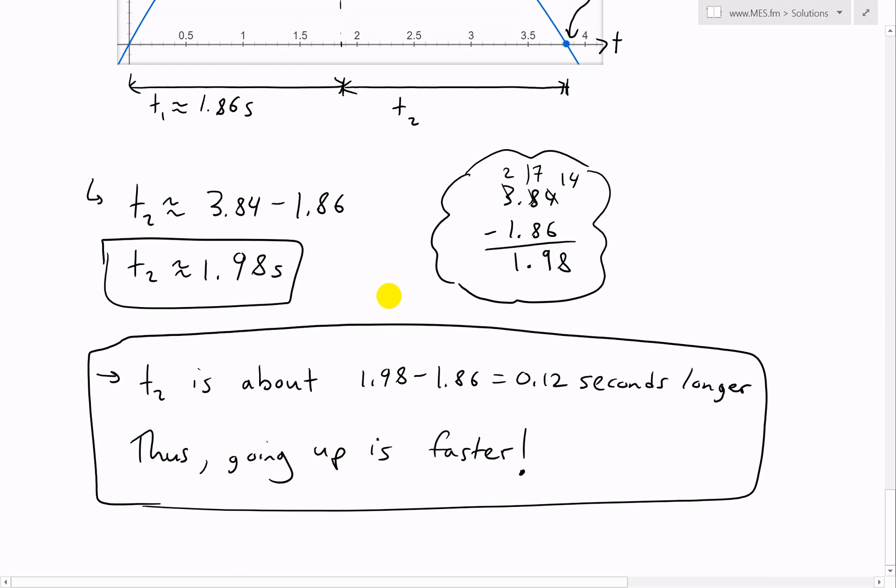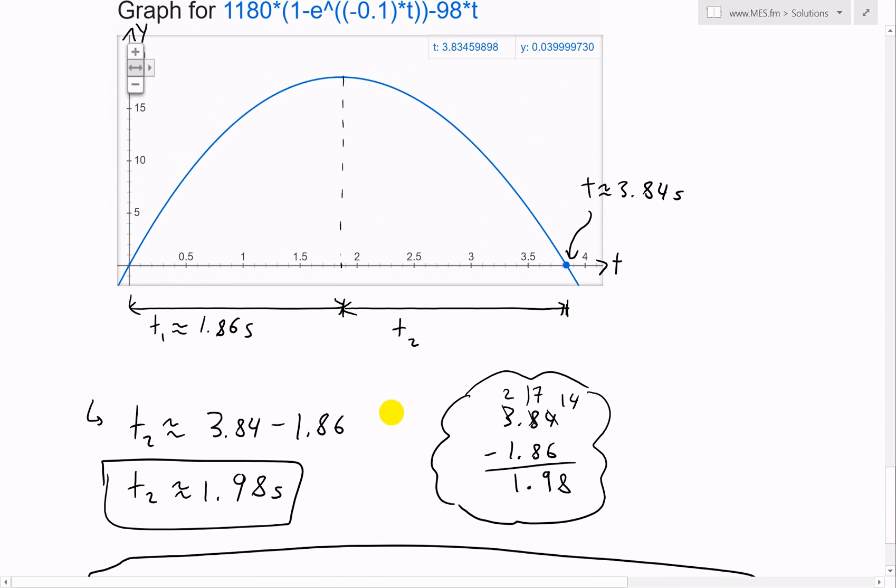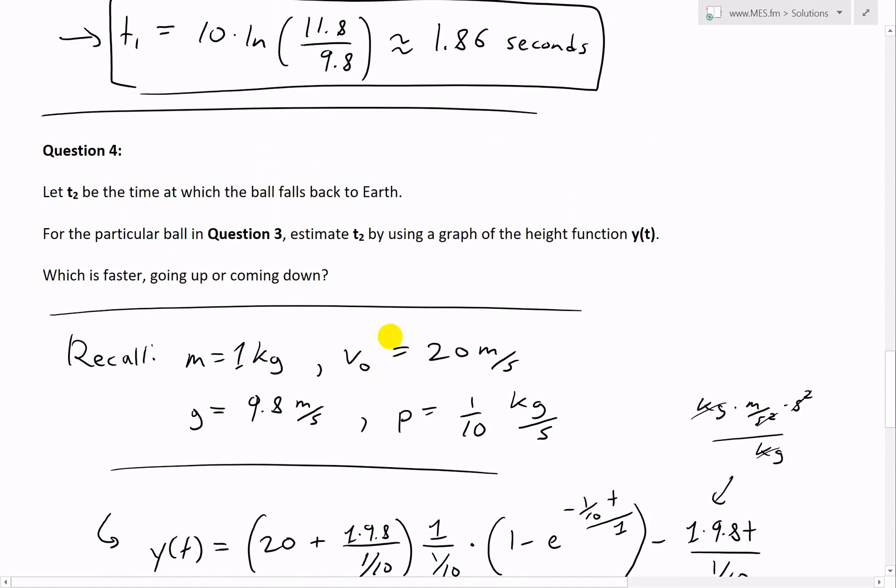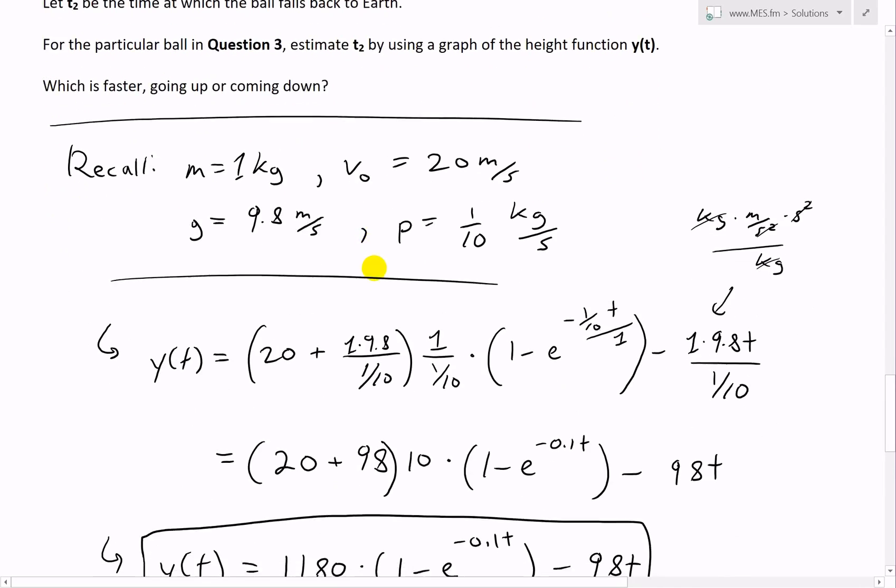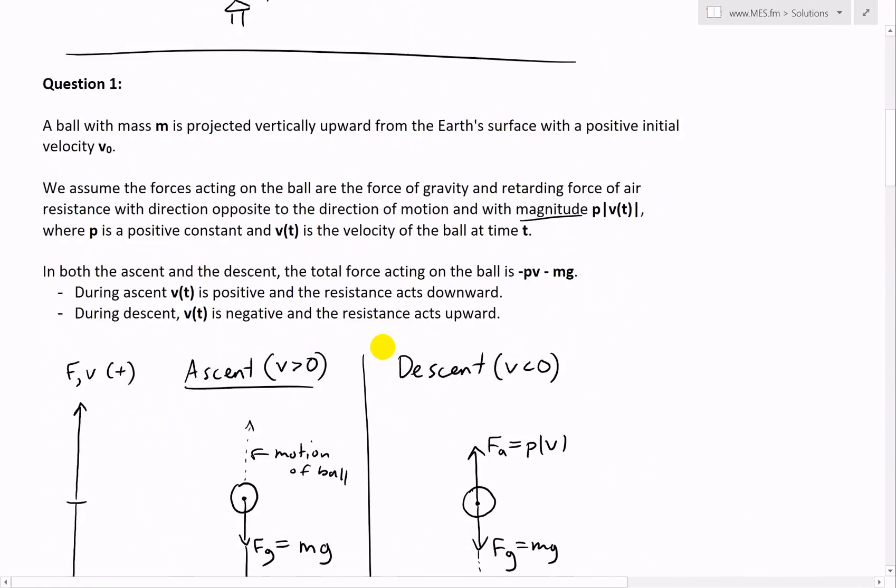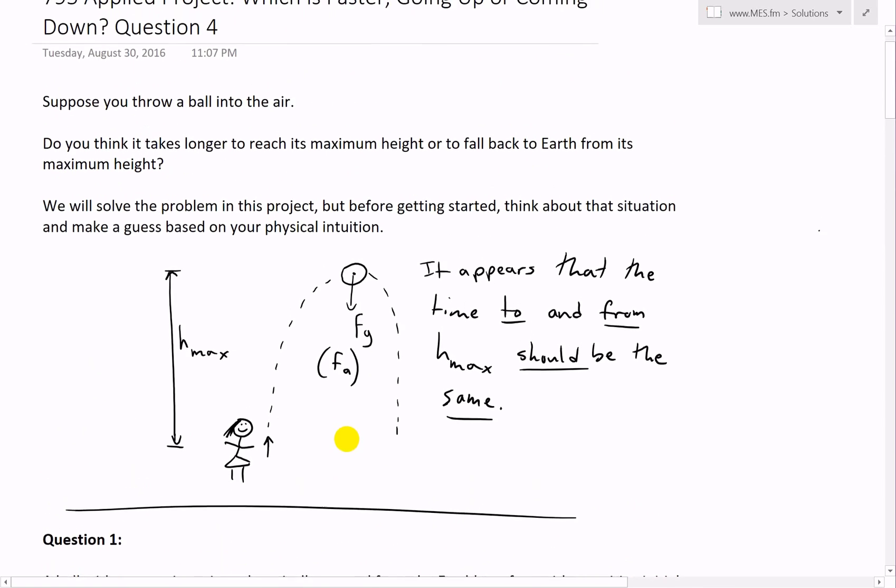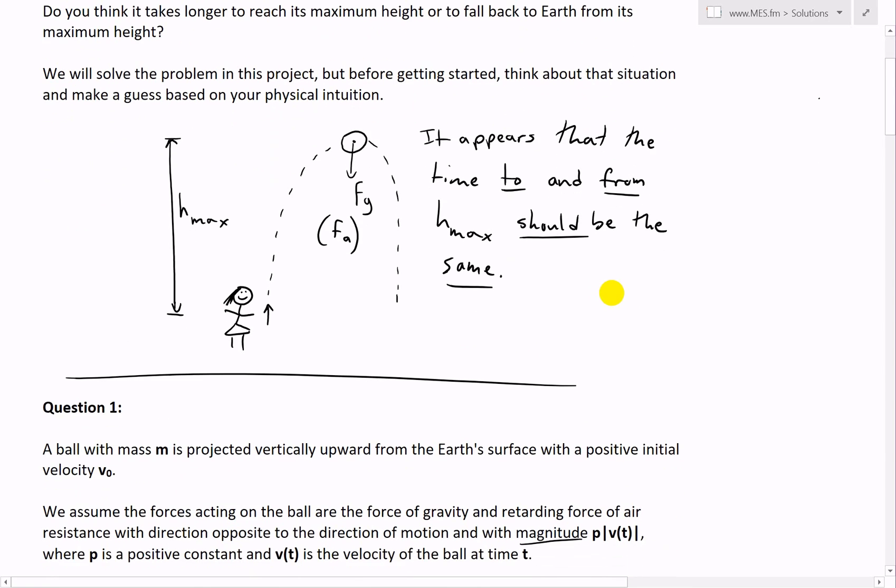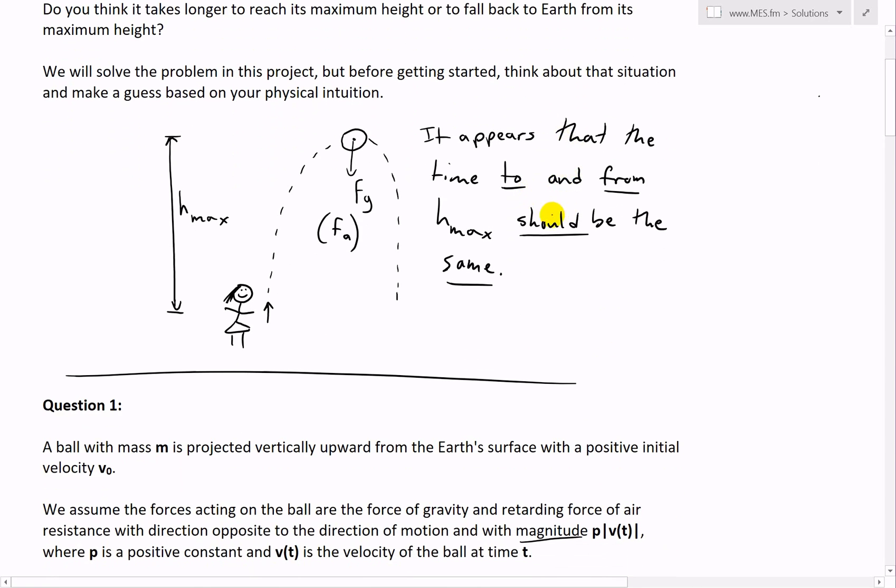In the next video, question five, I'll go over the general case for why it's always faster to show that it's always faster going up than coming down. I want to recap on my initial guess. Before I started this applied project, I guessed that the time to and from H max should be the same. In fact, I got this wrong.